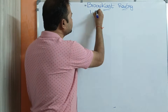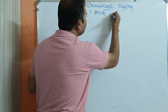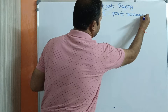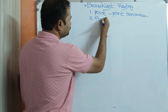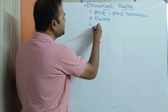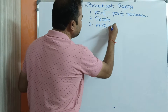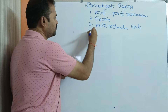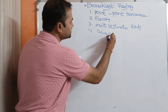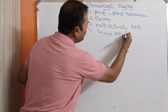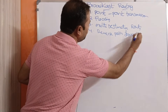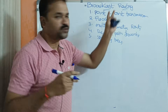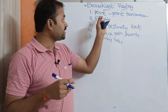The first method is point-to-point transmission. The second method is flooding. The third one is multi-destination routing. The fourth one is reverse path forwarding. The fifth one is spanning trees. By using these five methods we can implement broadcast routing.